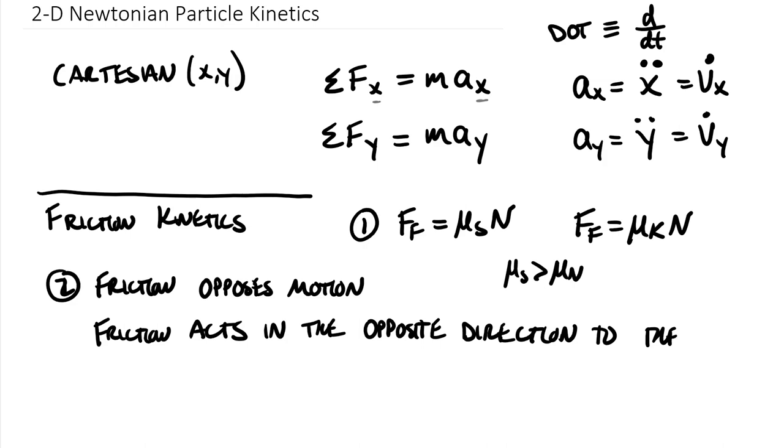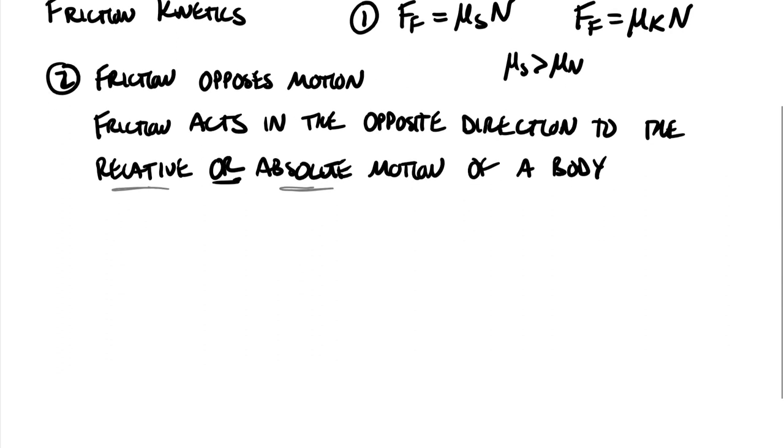Friction acts in the opposite direction to the relative or absolute motion of a body. You were exposed to this idea of relative versus absolute motion in the previous chapter as we talked about relative motion between particles. So let's see if you can apply this concept to a case study.